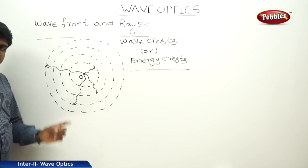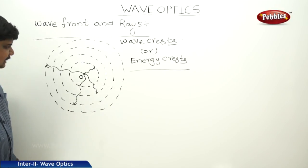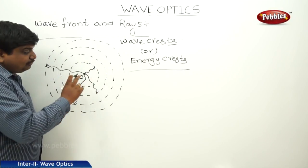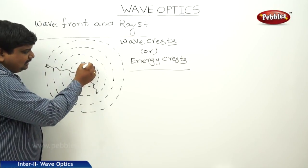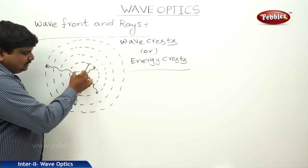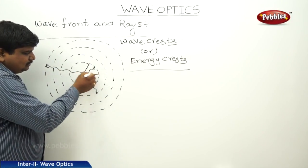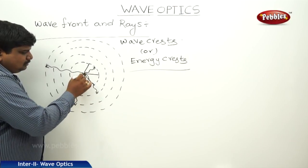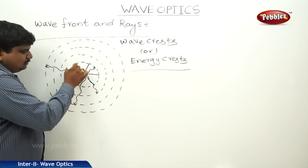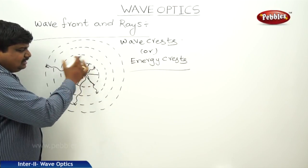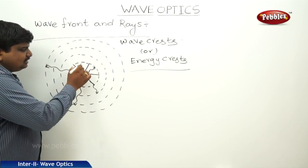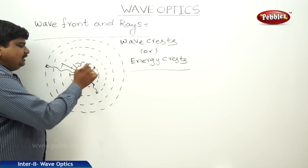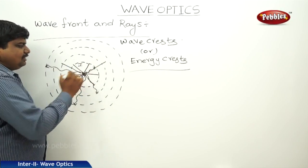In such cases, the locus of all the points which are moving with the same phase — it is a wave front. Let us assume this is the first wave front. Next, from here, the second wave front.